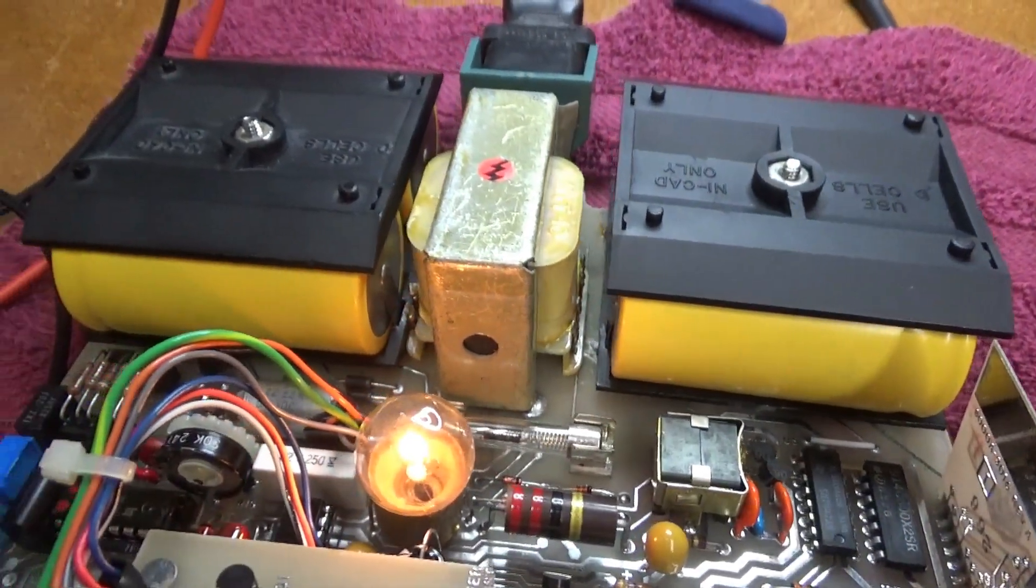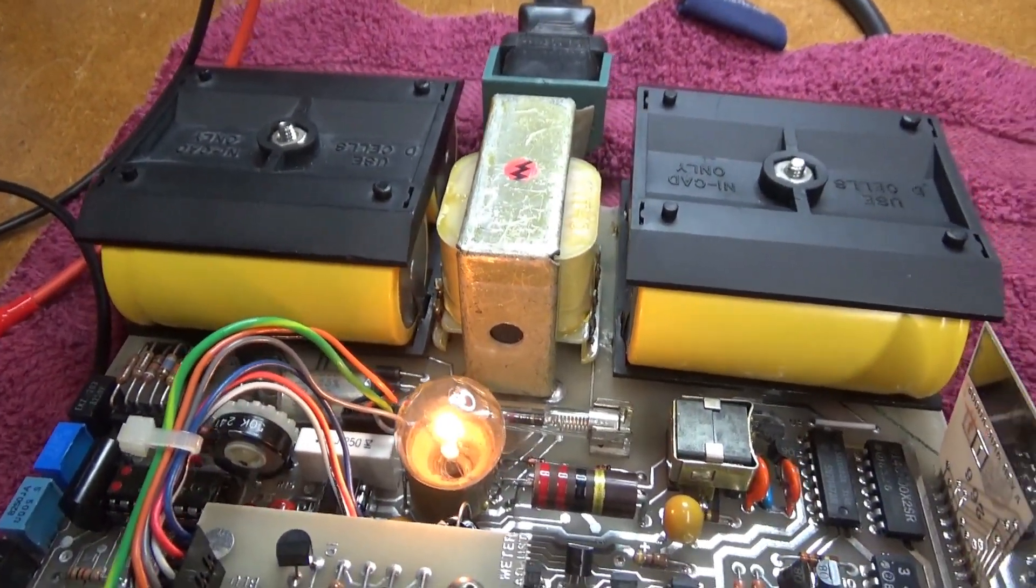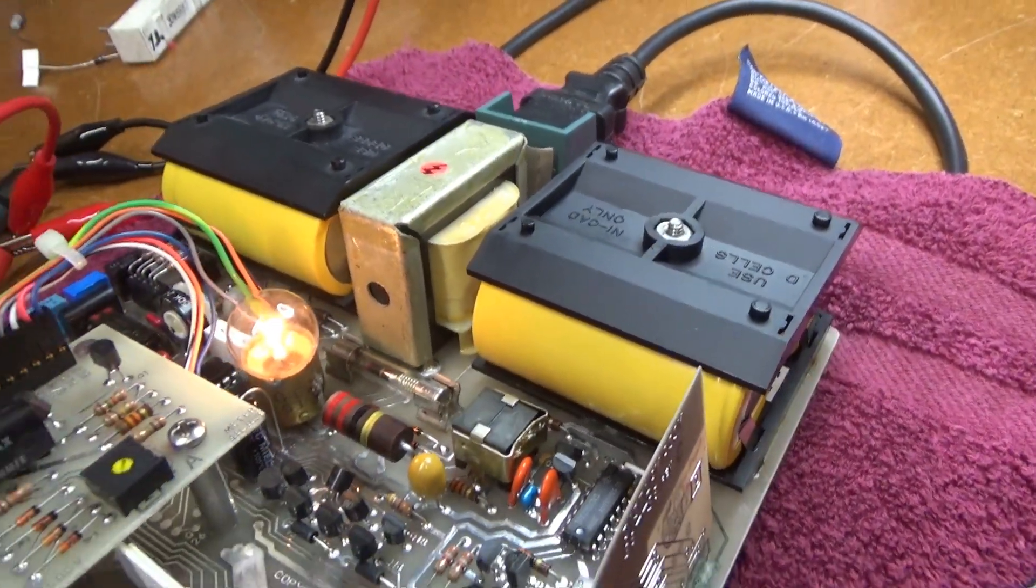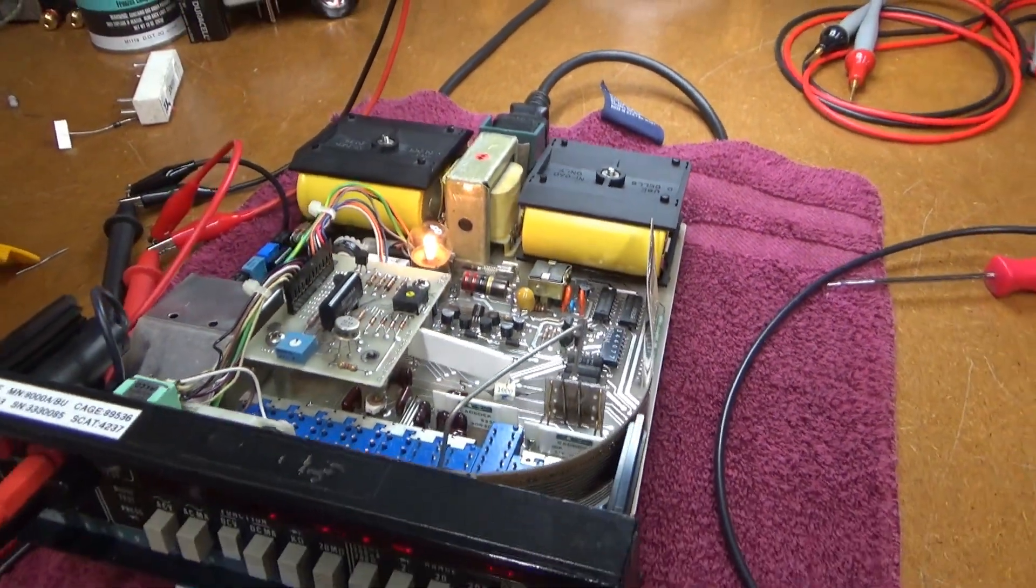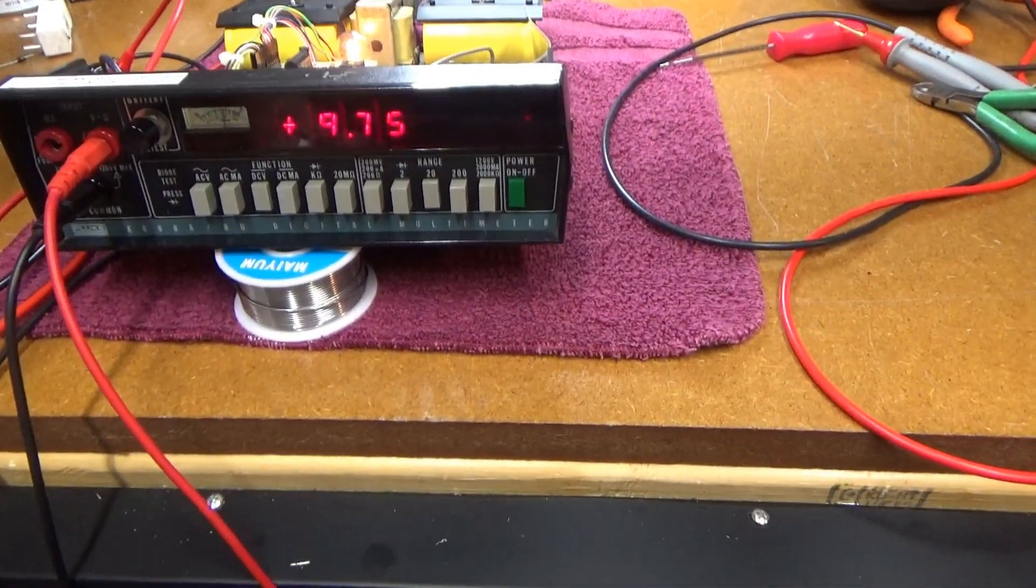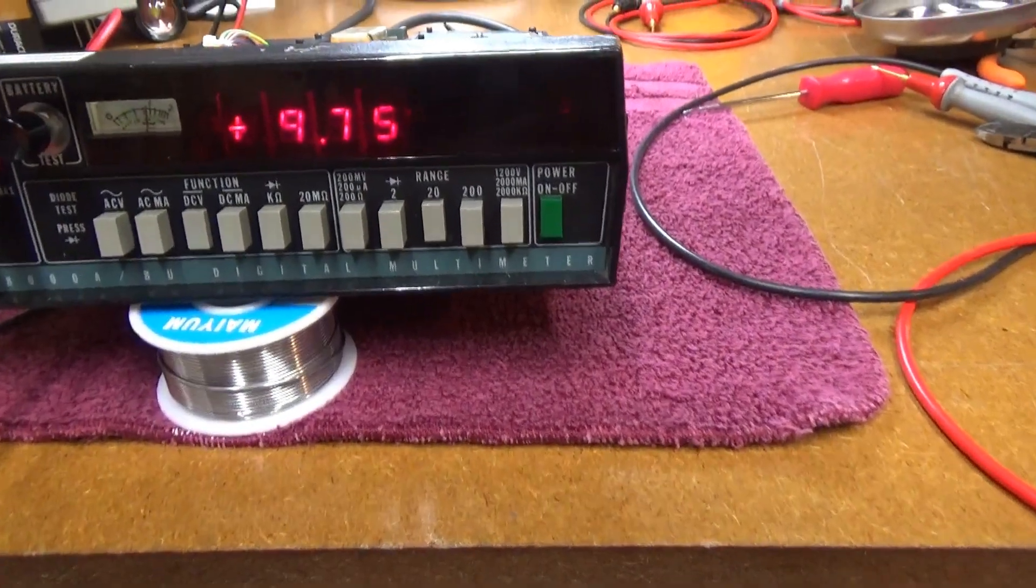Alright, got the brand new NiCAD batteries in there. There's big old D-cells. It runs this thing for several hours on battery. And although I'm still having some issues with the offset voltage, right now it seems to be working.